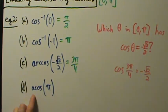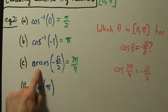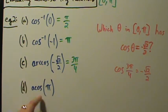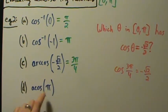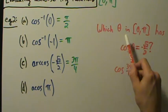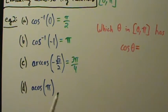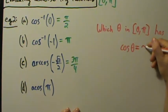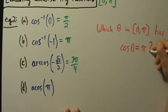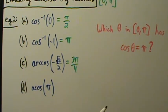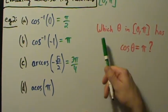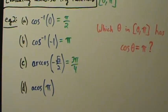Part D: acos of pi. Remember, 'a cos' is short for arc cos, which is the same as inverse cosine. So we're asking: which theta in 0 to pi has cosine of theta equal to pi? This is tricky because we're using pi as the input value. Just like in the previous video, there are a couple of ways to think about this.